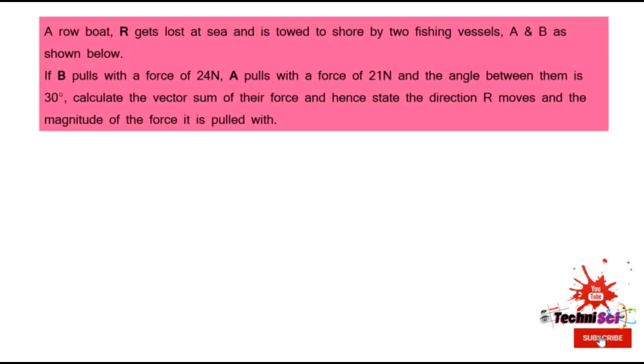So here's a question: a rowboat R gets lost at sea and is towed to shore by two fishing vessels A and B as shown below. If B pulls with a force of 24 newtons, A pulls with a force of 21 newtons and the angle between them is 30 degrees, calculate the vector sum of their force and hence state the direction R moves and the magnitude of the force it is pulled with.